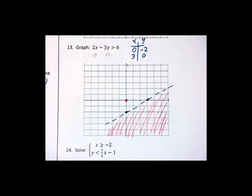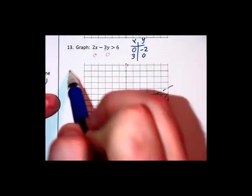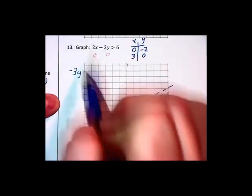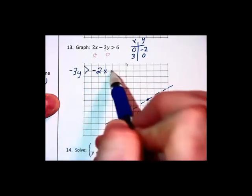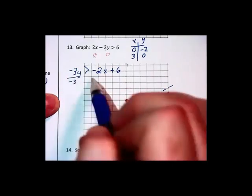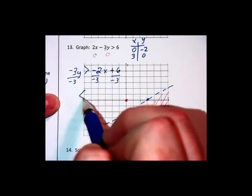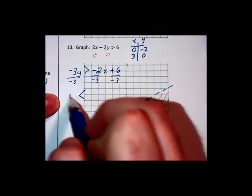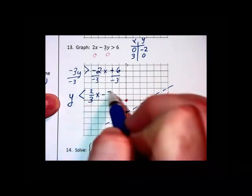It turns out that had we put this into slope intercept form, had we kept the negative 3y on the left, subtracted the 2x off of each side, we would have had negative 2x plus 6. Dividing by negative 3, whenever we divide by a negative, we change the direction of the inequality around. And that would have been y is less than two thirds x minus 2.